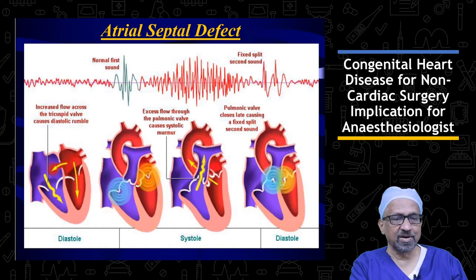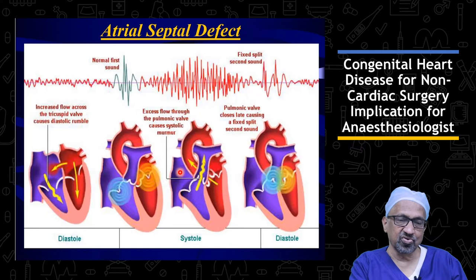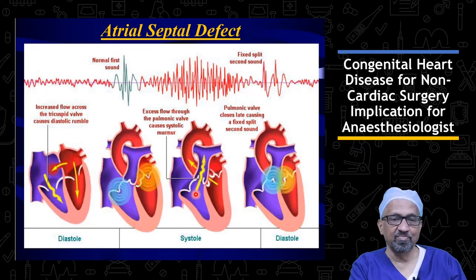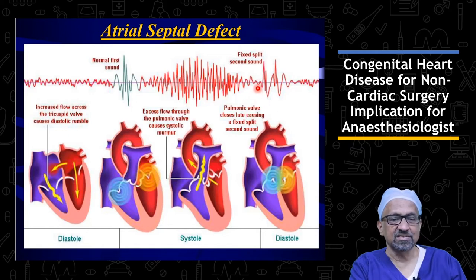Patients with atrial septal defect have increased pulmonary blood flow and hence may exhibit an ejection systolic murmur in the pulmonary area. Because of the increased blood flow through the tricuspid valve, there may be a mid-diastolic rumbling murmur best heard in the tricuspid area during the inspiratory phase of respiration. The second heart sound is split, and this split is fixed because of the late closure of the pulmonary valve.